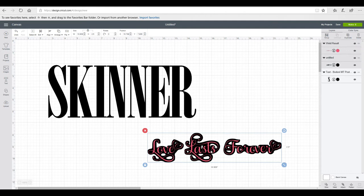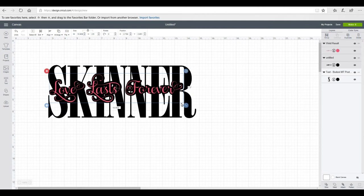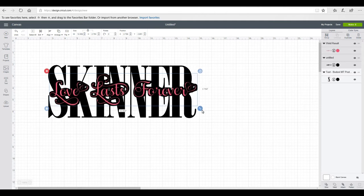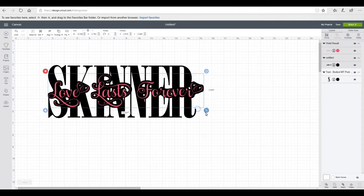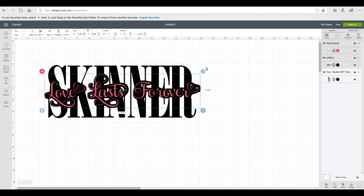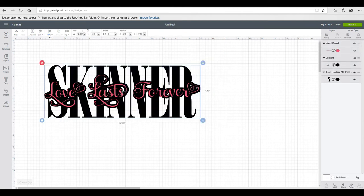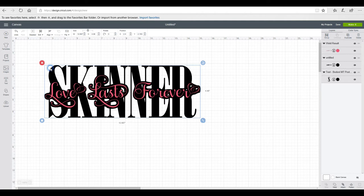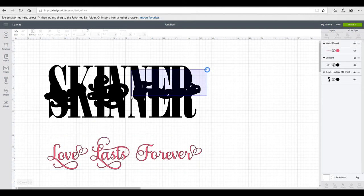Once I'm happy with that I'm going to highlight both of those and I'm just going to bring them over to my text. Then I can work out how I want it to look and I might make that a little bit bigger. I'm then going to highlight all and I'm just going to go to align and I'm going to center it all.